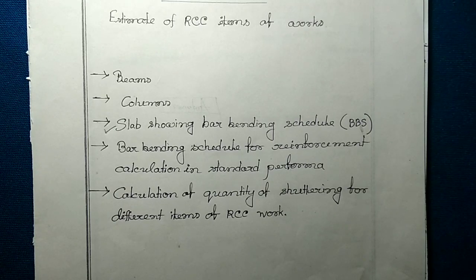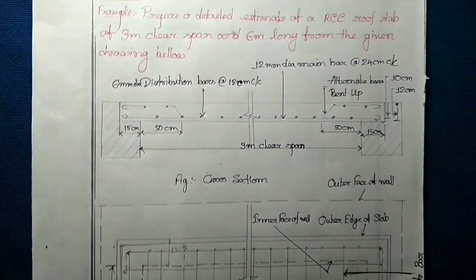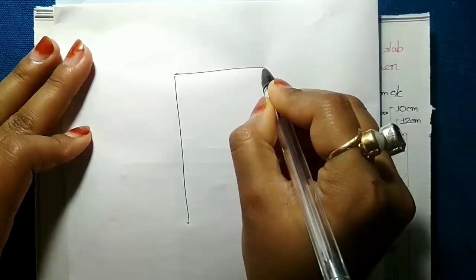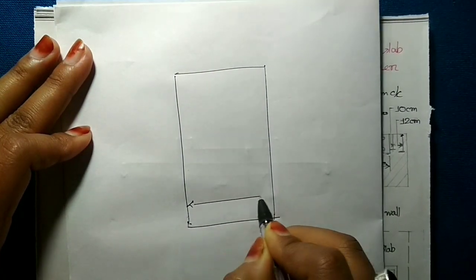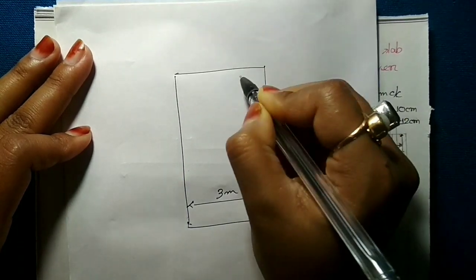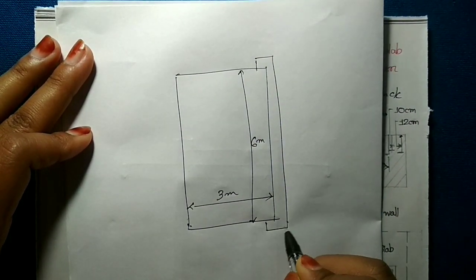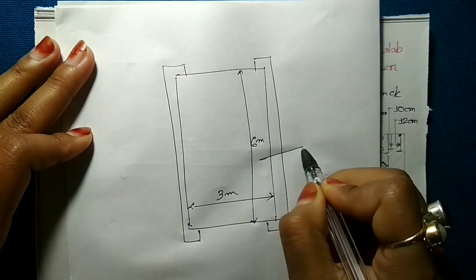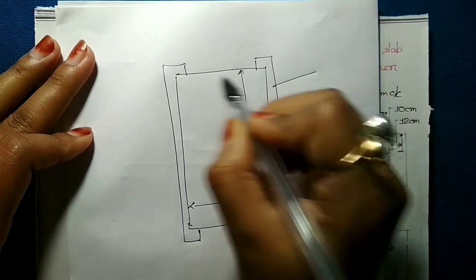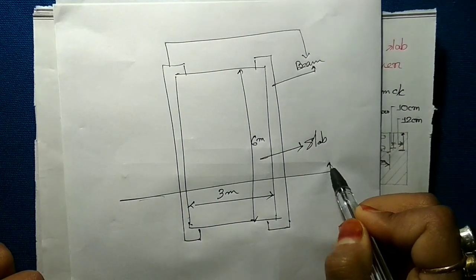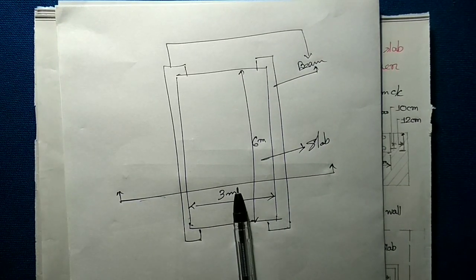Hello everyone. Today's topic is slab, and in this class we are going to prepare a detailed estimate of an RCC roof slab. In this question, the clear span is 3 meters and the length is 6 meters. The slab is resting on the beam, and if we cut this portion and see from here, we can see a section.